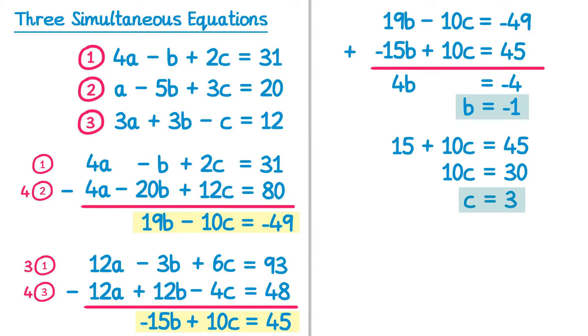I just need to get a. Now I can't use any of these new equations to get a because a doesn't appear in them. So I need to return to one of my very first equations. It doesn't matter which one of the three you use, I'm going to use the first one. So I've got 4a, take away b, but I know b is negative 1, so if I take away negative 1, that's just plus 1. And then plus 2c, but I know c is 3, so that's plus 6. If you simplify this, you've got 4a plus 7 equals 31. Take away 7 from both sides, you get 4a equals 24. And then divide by 4, you'll get a equals 6.